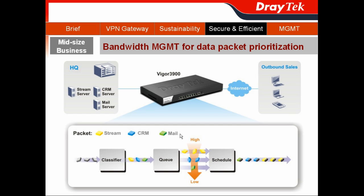For the APC company, they would like to have the data packet sent by the streaming server as the highest priority, the packet sent by the CRM server in the medium priority, and the mail server as the lowest priority.